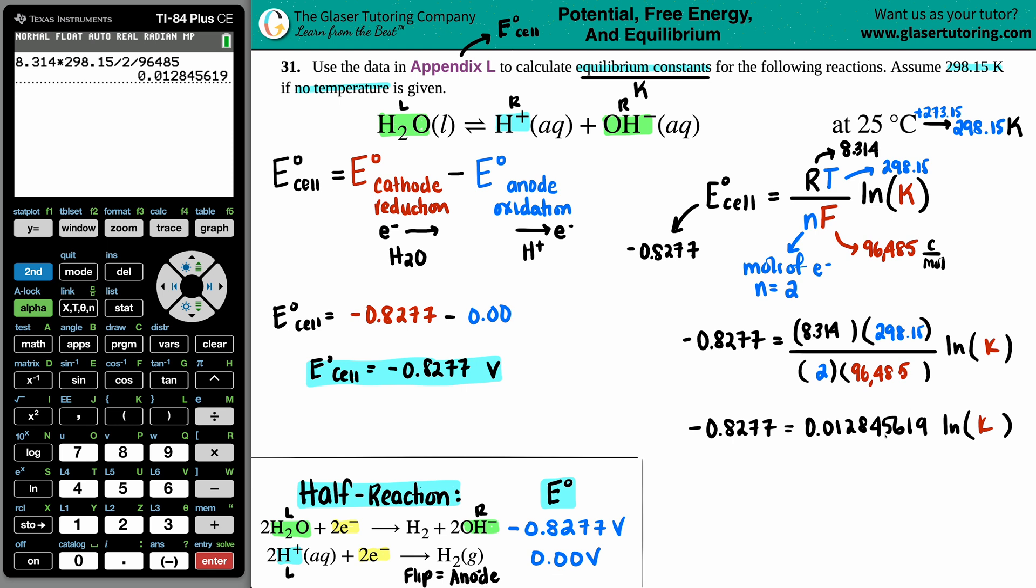So now, just solve for K. I just need to divide on both sides by that long decimal value. 0.012845619. And now we have this equal to ln of K. Negative 0.8277 divided by, pull that whole number from the top. Press enter. Love the TI-84. Just makes life so much easier. And this is now going to be negative 64.4344. You get the point. No rounding. Not the final answer.